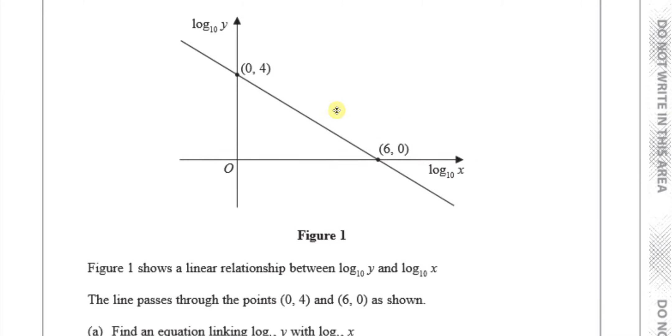Now, any graph which is linked with a linear relationship, if it makes a straight line graph, has got the form y equals mx plus c, where m is the gradient and c is the y-intercept. So we can see here that the y-intercept c is equal to 4 straight away. And the gradient m is going to be the change in y,